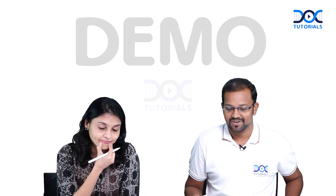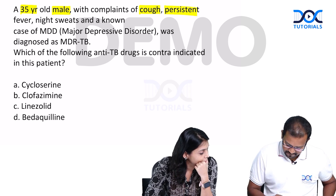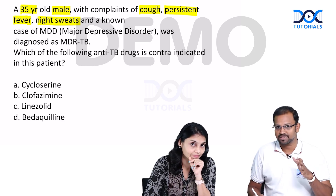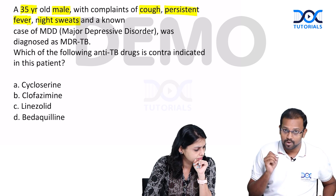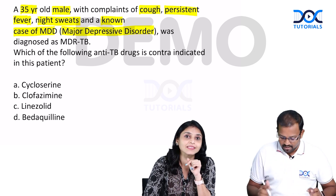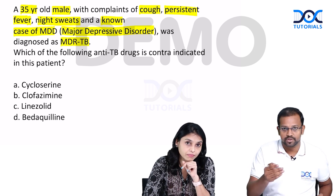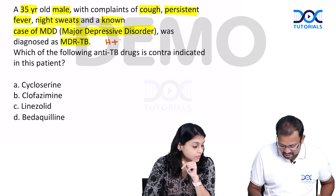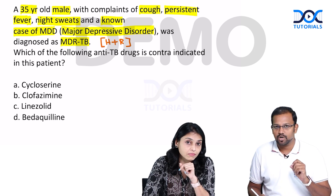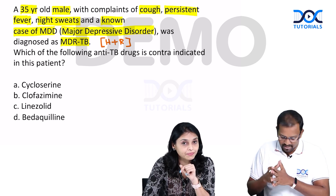We can directly go into the question which we are going to discuss about right now. This is a case of a 35-year-old male patient with complaints of cough, persistent fever, and night sweats — a classical trio. He also has a comorbidity: he is a known case of MDD, that is major depressive disorder, and he was diagnosed as MDR-TB, multi-drug resistant tuberculosis. MDR-TB means a patient who has been resistant to H and R — that is isoniazid and rifampicin resistant. We have a new nomenclature because the treatment regimen for MDR and for rifampicin-resistant tuberculosis is actually the same. We will be discussing that in a few minutes.